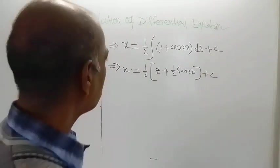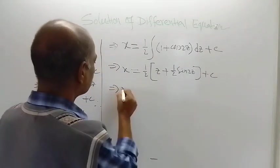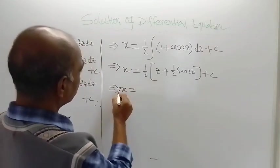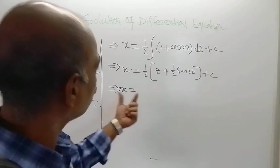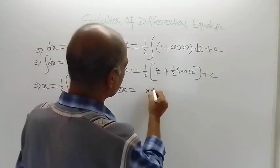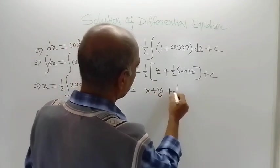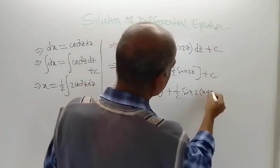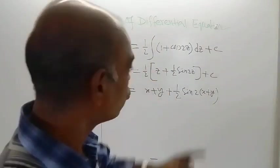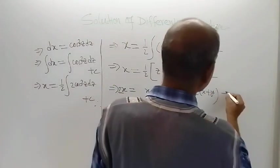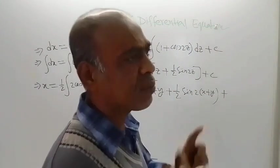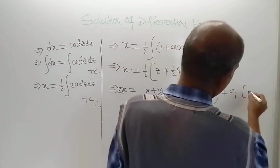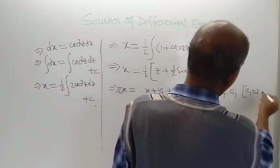Now substitute back z equals x plus y. Multiplying both sides by 2 to clear the fraction, we get 2x on the left-hand side. On the right-hand side we get (x plus y) plus one half sin 2(x plus y) plus 2c. Instead of writing 2c, we simply write c1, where c1 equals 2c — just another constant.